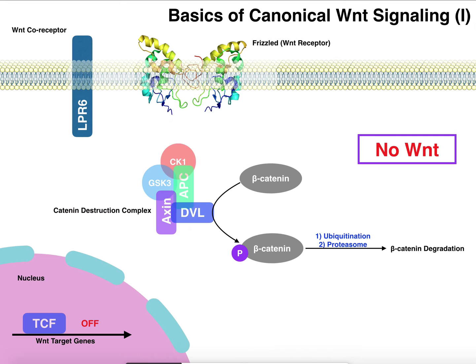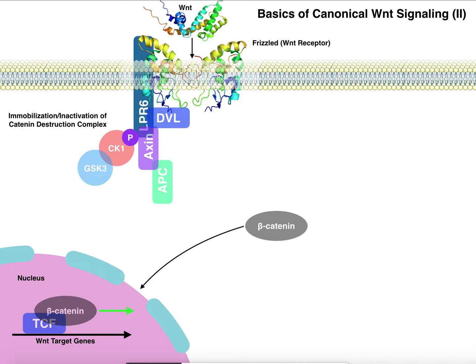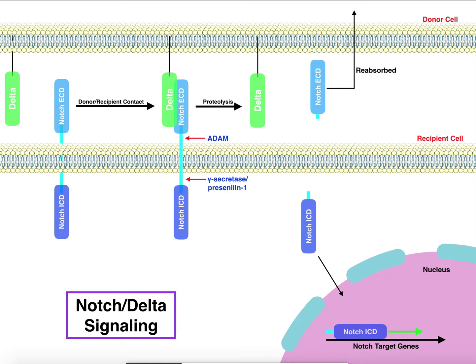In the previous video, we discussed the canonical Wnt signaling pathway, which is an important pathway in developmental biology. In this video, we're going to discuss the basics of Notch-Delta signaling. We're not going to discuss the functions of what happens in cells when you have Notch-Delta signaling, because the effects depend on the cell, the stage of developmental biology, even the organism. So we're just going to talk about the biosignaling, and you can apply that signaling depending on the organism.